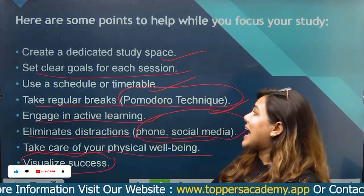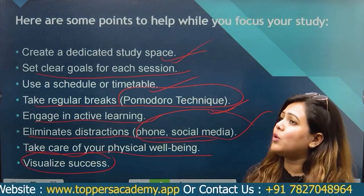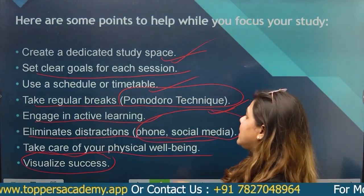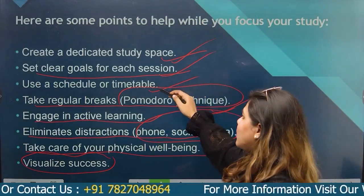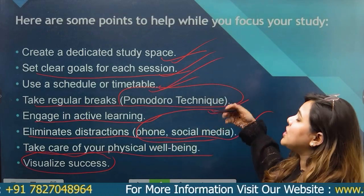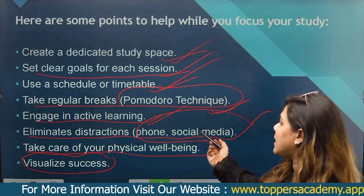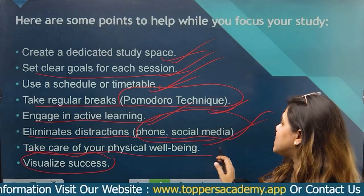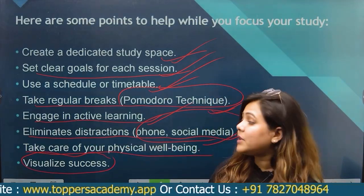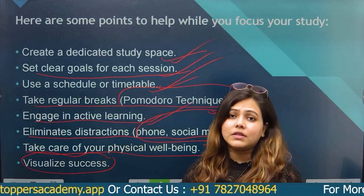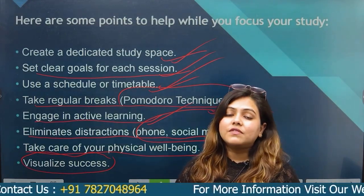The last point is to visualize success. If a child can follow all the points properly — provide a proper study space, create the right environment, make small goals to achieve long-term goals, follow a proper timetable, take regular breaks, engage in active learning, keep all distractions away, and take care of physical and mental health — then ultimately they can achieve their goals, whatever those goals may be.